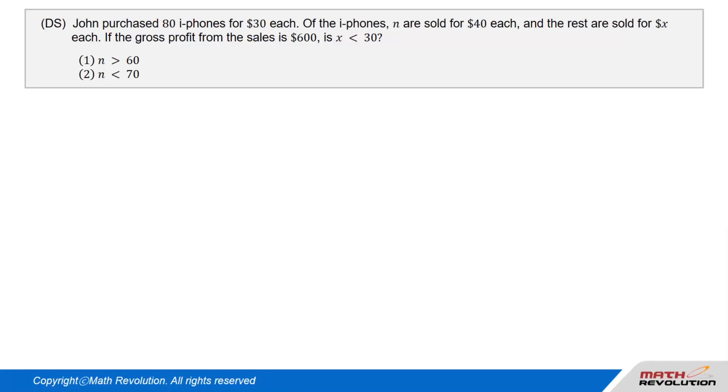Question 6. DS. John purchased 80 iPhones for $30 each. Of the iPhones, N are sold for $40 each, and the rest are sold for X dollars each. If the gross profit from the sales is $600, is X less than $30?